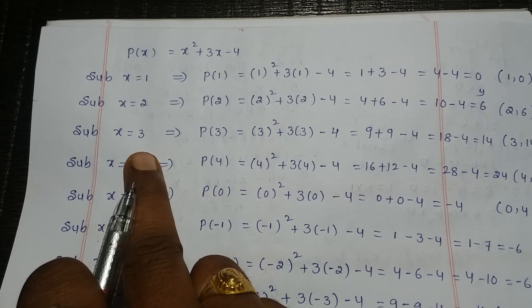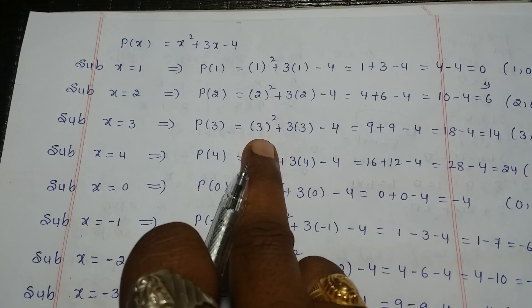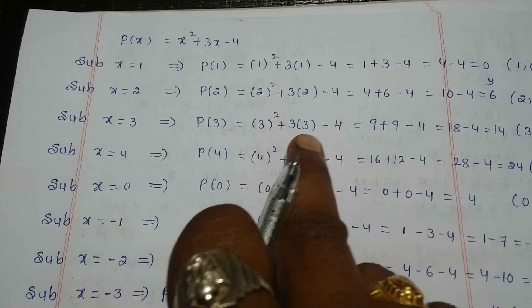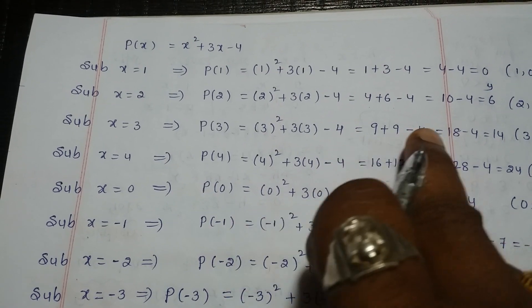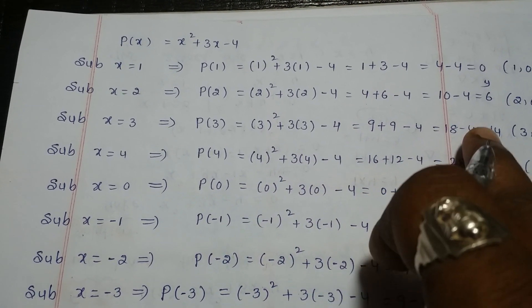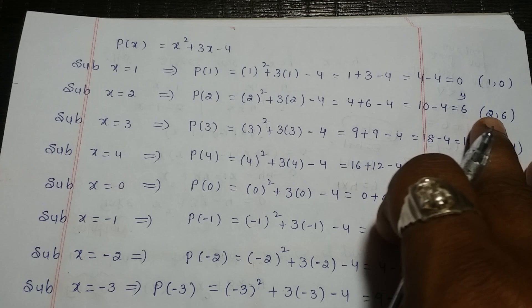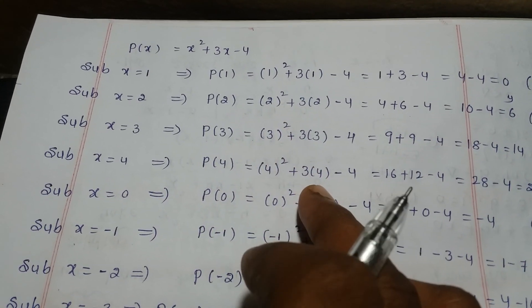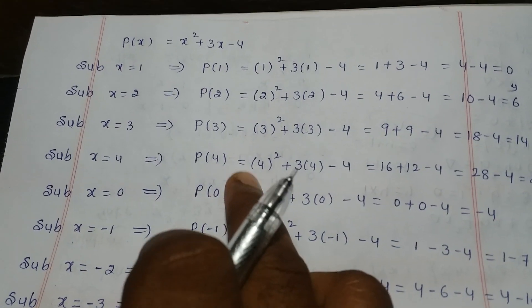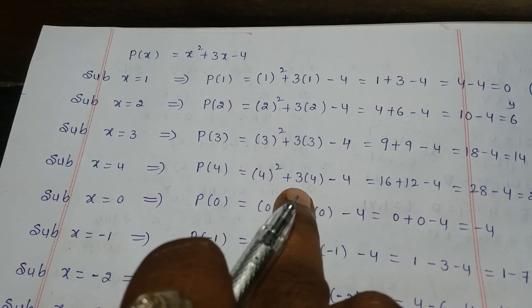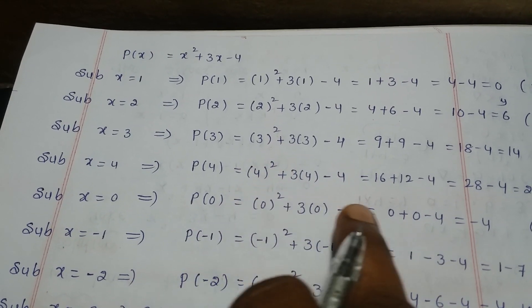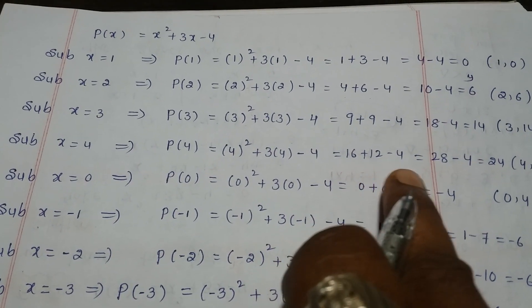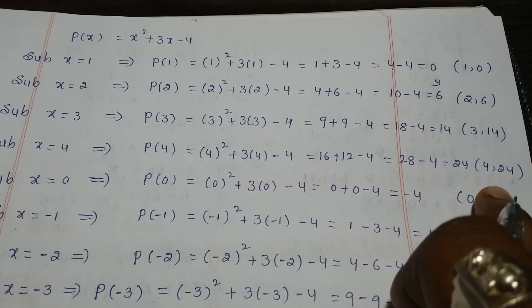Substituting x is equal to 3: p of 3 equals 3 square plus 3 into 3 minus 4. 9 plus 9 minus 4 gives 14. So the point is 3 comma 14. Substituting x is equal to 4: 4 square plus 3 into 4 minus 4 equals 16 plus 12 minus 4, which is 24. So the point is 4 comma 24.